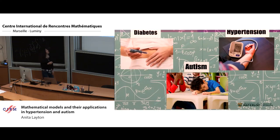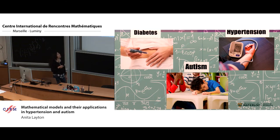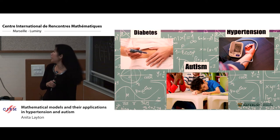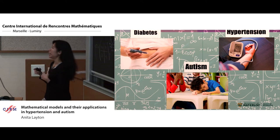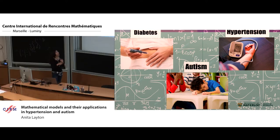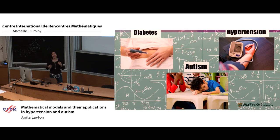I usually talk about three diseases, but that's really too much because we get hungry and want to have lunch. So I'm going to focus first on one study I've done related to hypertension. And then I'll talk about another one that I basically didn't do — Masha did. I was a cheerleader, but I thought it was really cool, so I'll talk about his autism work.